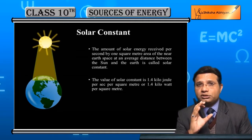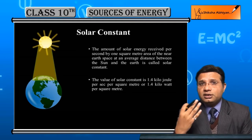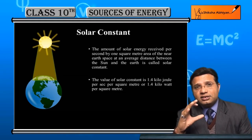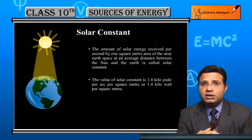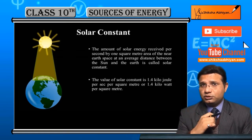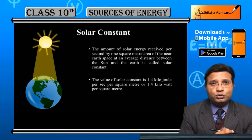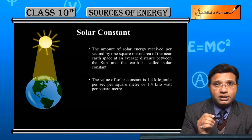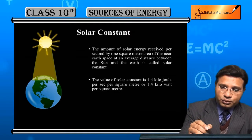So, the value derived based on how much of the sun's energy is incident on Earth's surface is called the solar constant. It gives us an idea of how much amount of energy from the sun is incident on Earth's surface.